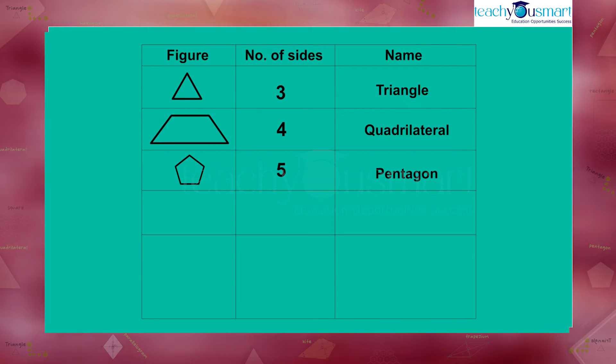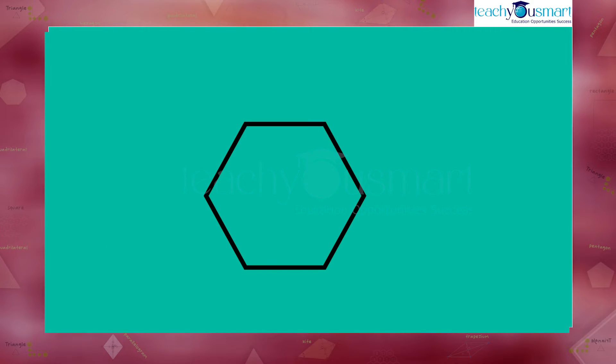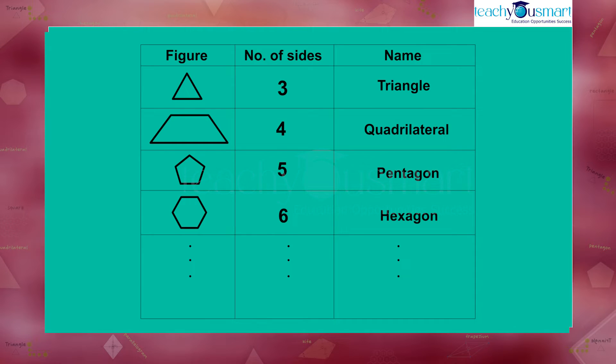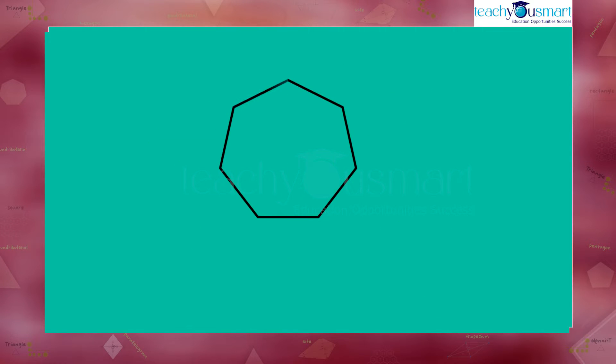Consider a polygon and draw a line from one vertex to another that is not on the same line segment. This line is diagonal. That is, a diagonal is a line segment connecting two non-consecutive vertices of a polygon.